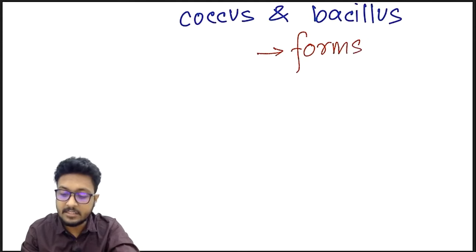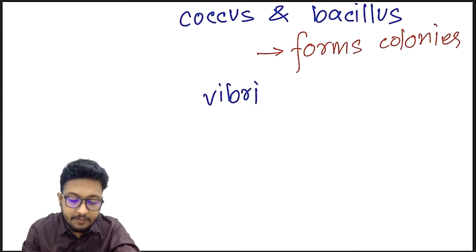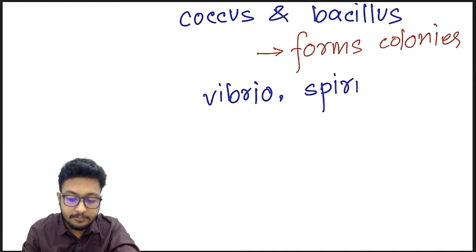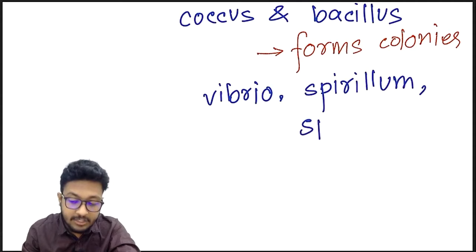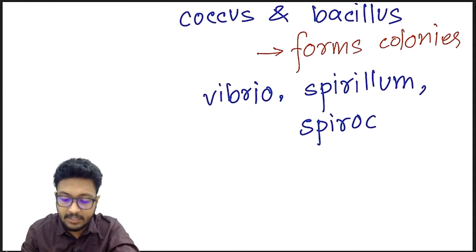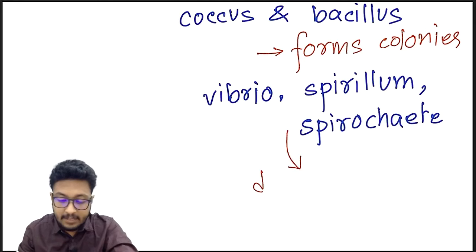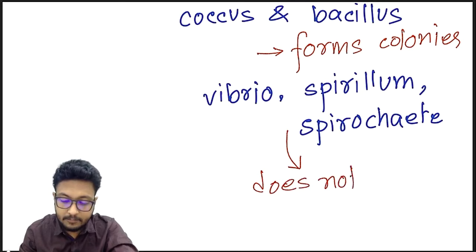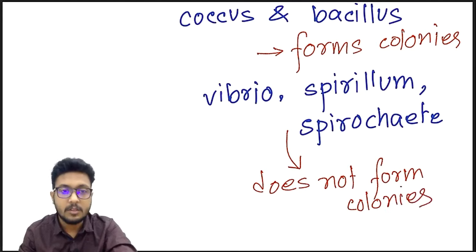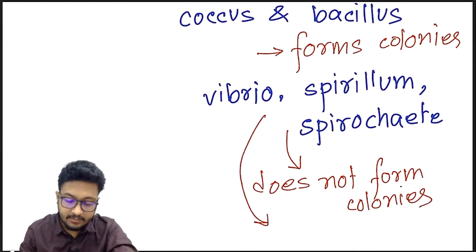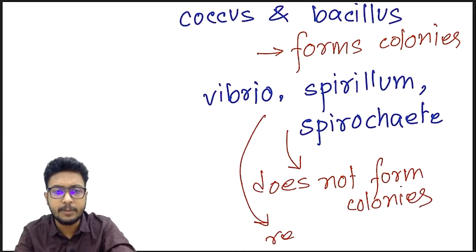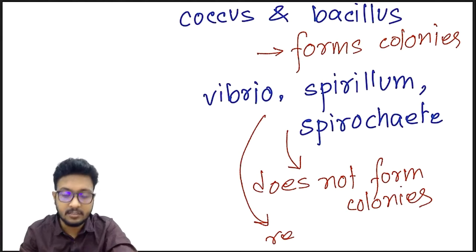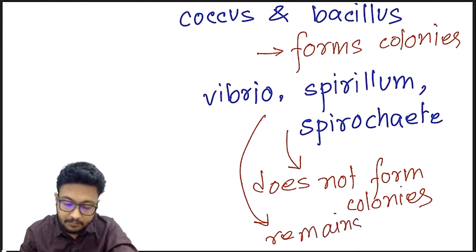Coccus and bacillus hardly remain solitary — they form colonies. Whereas vibrio, spirillum, and spirochete do not form colonies and remain solitary, meaning individual bacteria are not attached together.